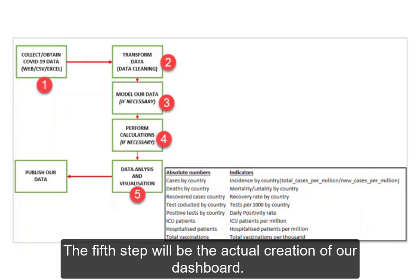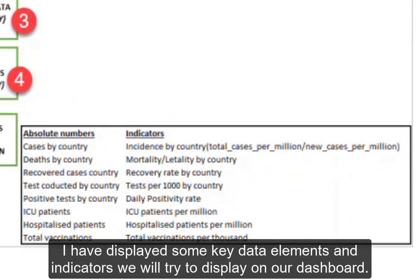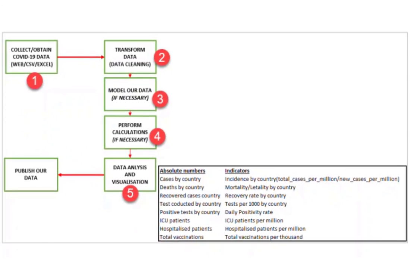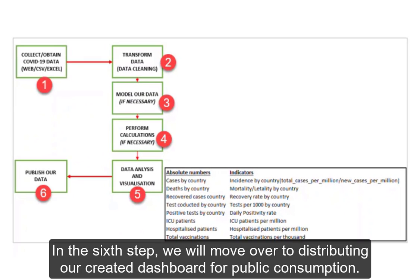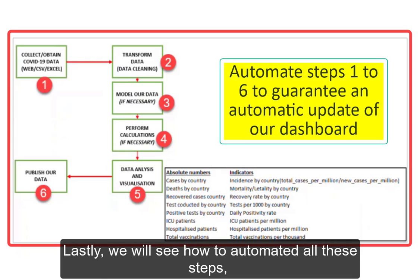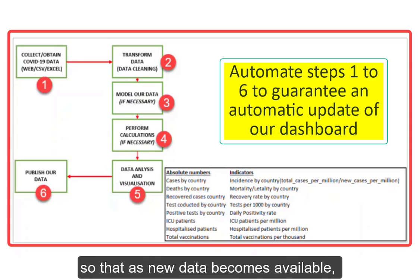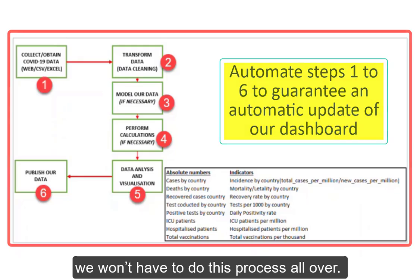The fifth step will be the actual creation of our dashboard. I have displayed some key data elements and indicators which we will try to display on our dashboard. In the sixth step, we will move over to distributing our created dashboard for public consumption. Lastly, we will see how to automate all these steps by scheduling an automated refresh so that as new data becomes available, we won't have to do this process all over.